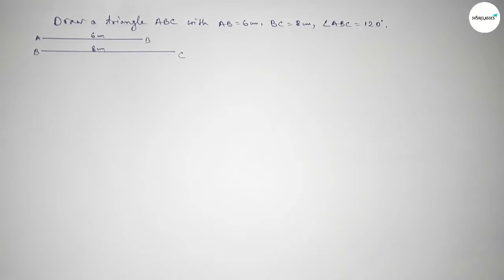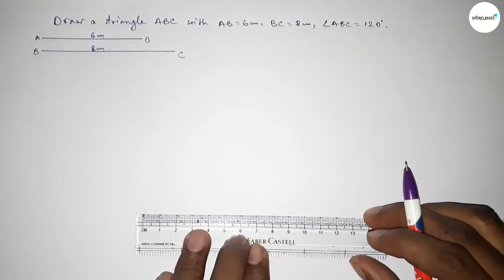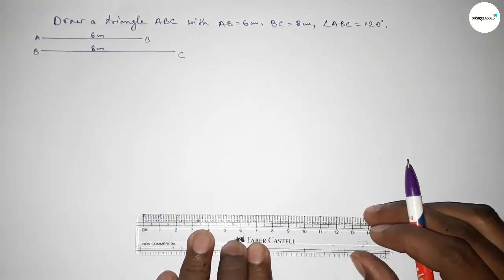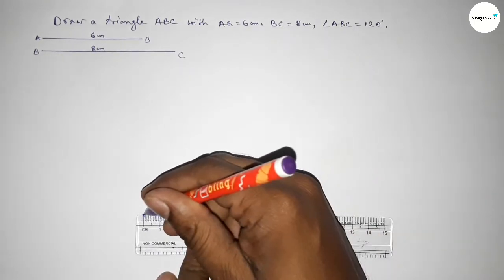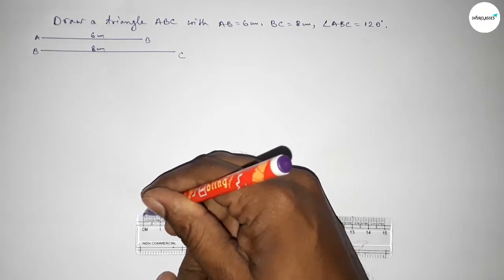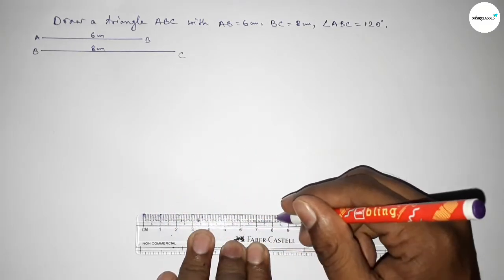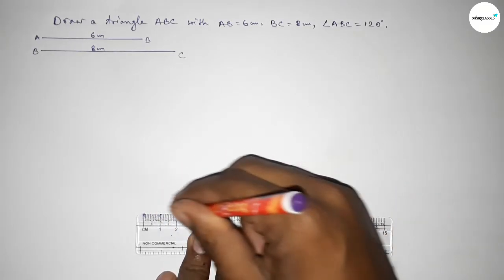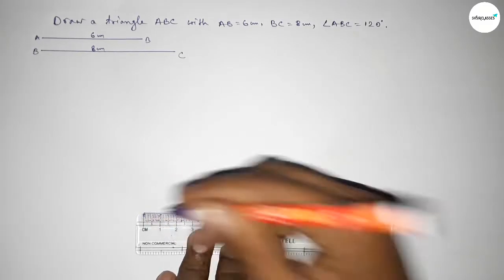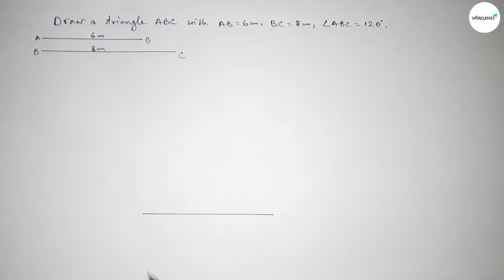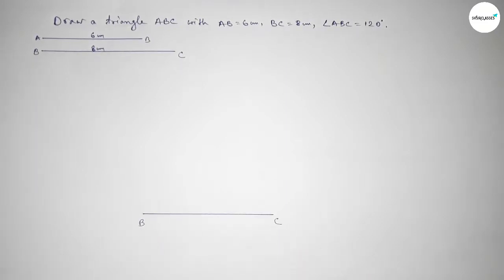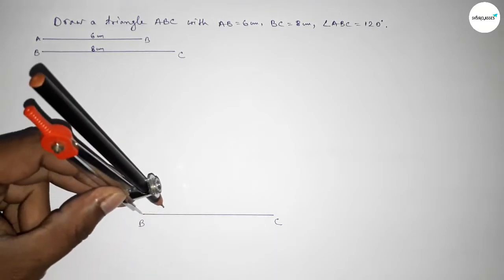Now first drawing here a line of length 8 centimeter. This is the 8 centimeter line, taking here point B and here point C. Now we have to draw a 120 degree angle on the point B.